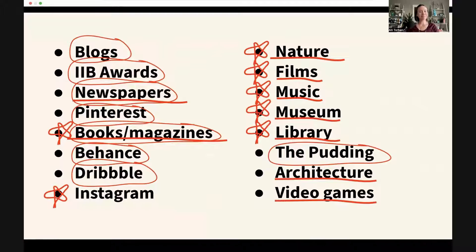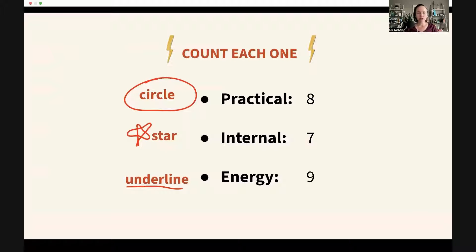I marked up my list, and you can see I did have a lot of practical inspiration at first — blogs, IIB awards, newspaper, Pinterest, Behance, Dribbble. Then as you run out of those you start thinking of where else you get inspired, so things where I'm actually resting: watching a movie, going out in nature. And other things that give me a spark of energy elsewhere, like architecture. Now count how many of each you have: count your circles, your stars, and your underlined items.